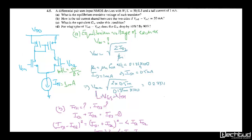Coming to the problem: a differential pair uses input NMOS devices with W/L ratio of 50.5 and tail current of 1mA. You have been asked what is the equilibrium overdrive voltage of each transistor. So you know that 1mA current is passing through this current sink, so obviously 0.5mA will pass through each of the two transistors.